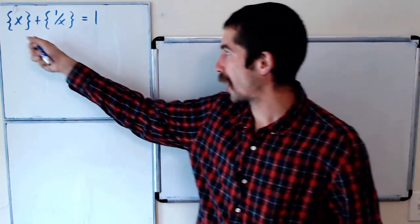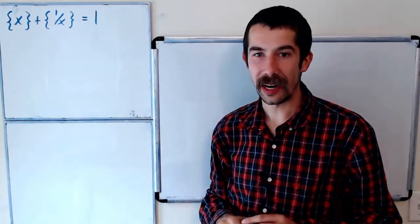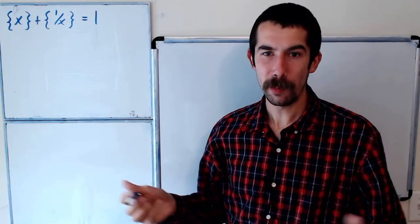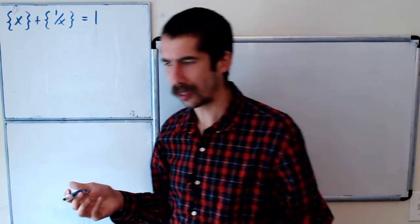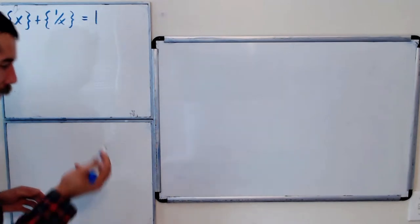Today we're going to solve the equation bracket x plus bracket 1 over x equals 1 and you might be wondering what is bracket x? Well bracket x is the decimal part of x.